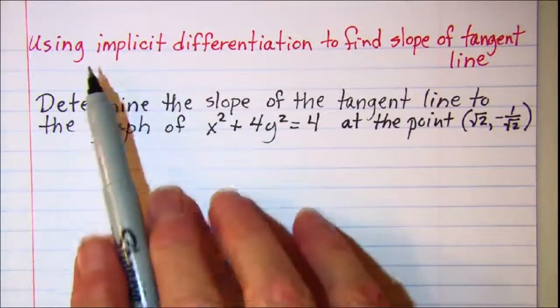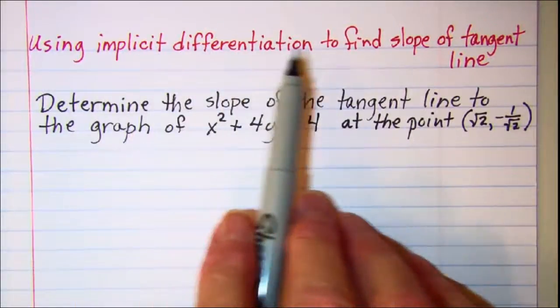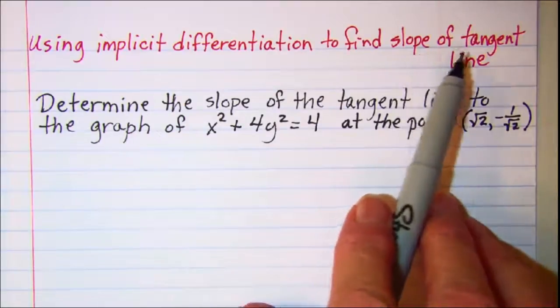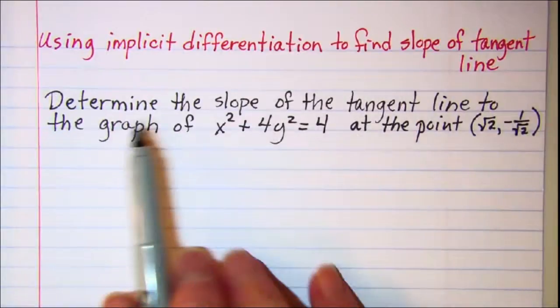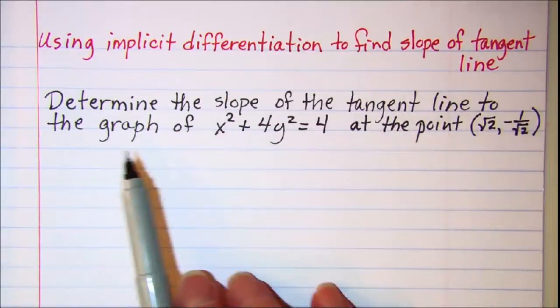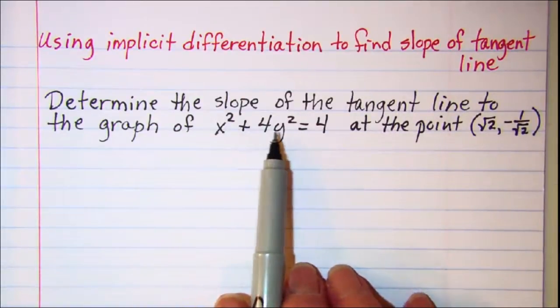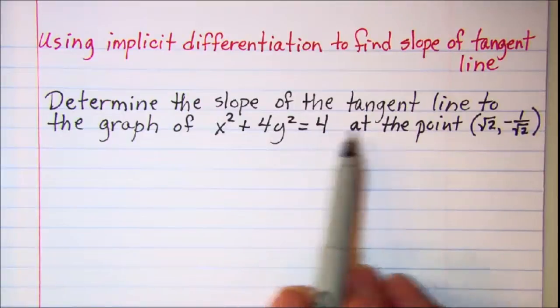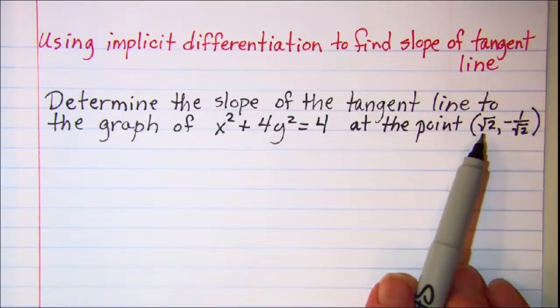In this video we'll be using implicit differentiation to find the slope of the tangent line. Our problem is to determine the slope of the tangent line to the graph of x squared plus 4y squared equals 4 at the point square root of 2,